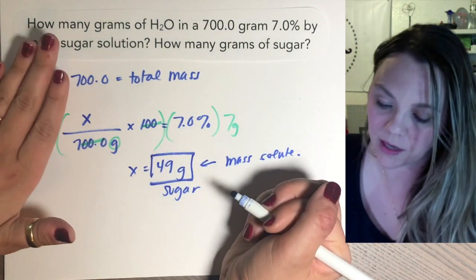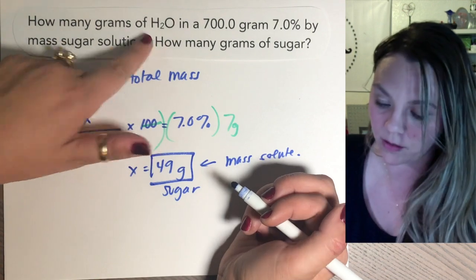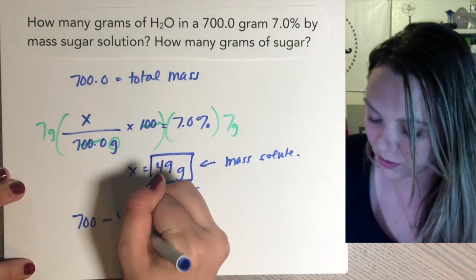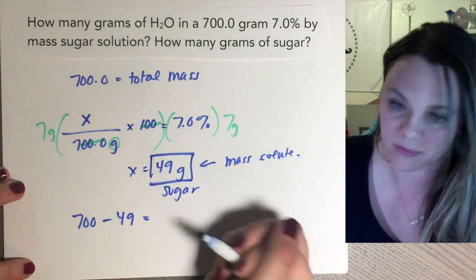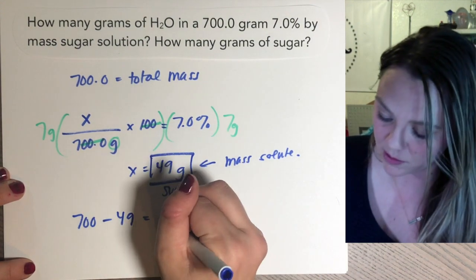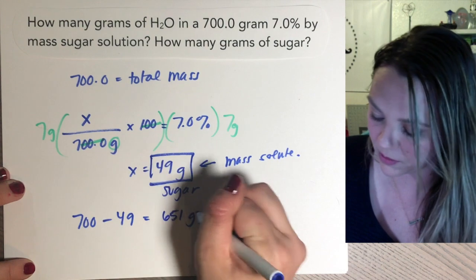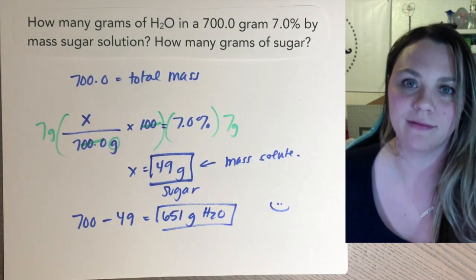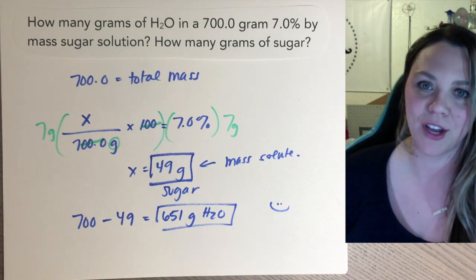And then it says how many grams was actually water. So you just take 700, subtract your 49, that sugar, and you get 651 grams of water. Not too bad. Mass percent. Good luck.